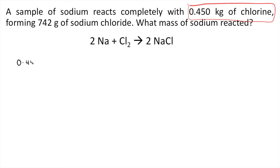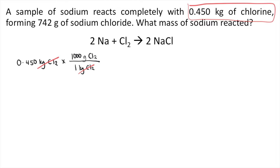We are given 0.450 kilograms of chlorine. The first step is to convert kilograms into grams. We know that one kilogram is equivalent to 1,000 grams, so the kilograms cancel out. Now that you have grams of chlorine, you need to convert that into moles.